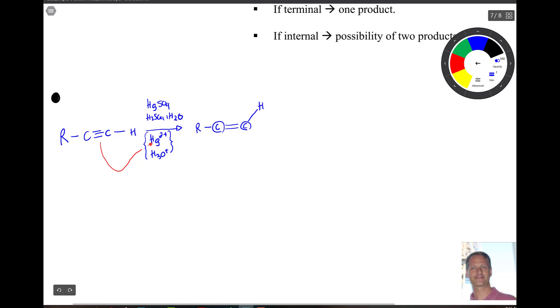Well, we want to put the mercury at a position that generates the most stable carbocation. So if we put the mercury here, then you'd have a plus charge here. And because you're substituted here with an R group, that's the more stable position.